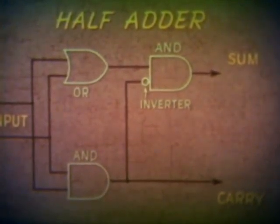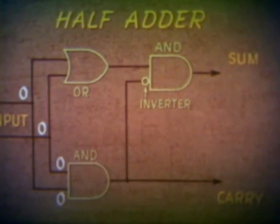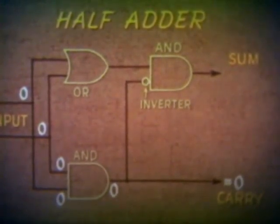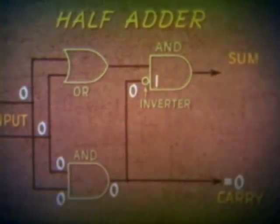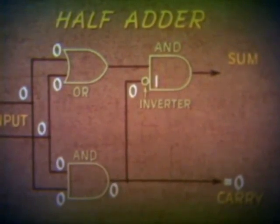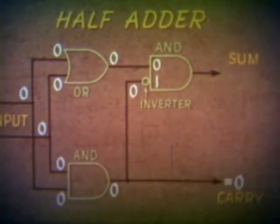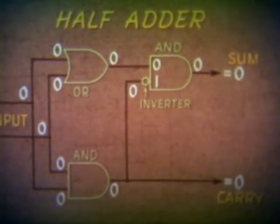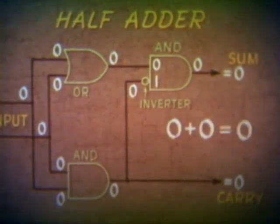To see how this half adder operates, let's first use two zero inputs. The two zeroes at the first AND gate result in a zero output, causing the carry output to be zero. This zero output is applied to the inverter, and it becomes a one input to the AND gate. The two input zeroes enter the OR gate, resulting in a zero output, which is a zero input to the AND gate. This zero and the one result in a zero sum output. Zero plus zero, then, equals zero — which is the correct result according to the rules for binary addition.